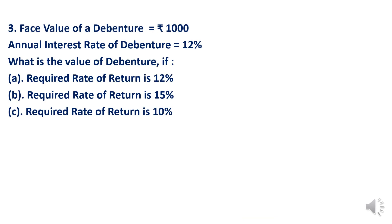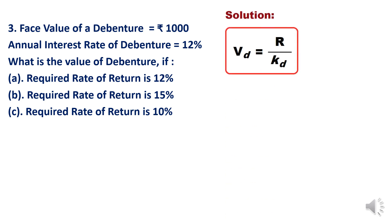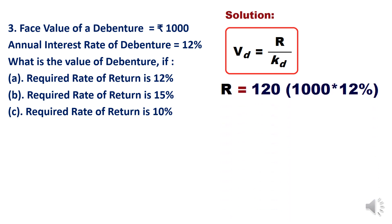Let's take one more question for better understanding. The face value of the debenture is 1000 and the annual interest rate is 12 percent. What is the value of the debenture if the required rate of return is: (a) 12 percent, (b) 15 percent, and (c) 10 percent? Three situations are given. The formula is Vd = R / Kd. R = 1000 into 12 percent = 120 rupees, which remains constant across all situations.